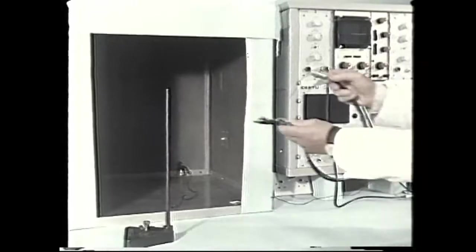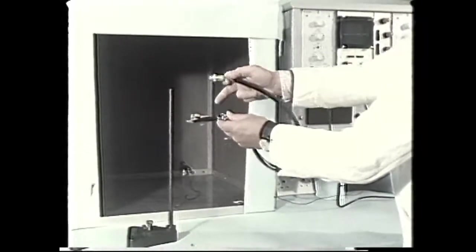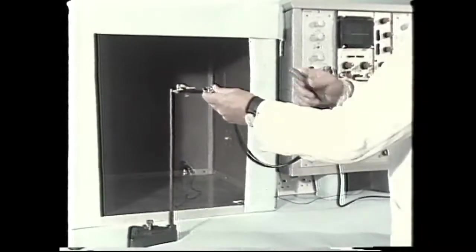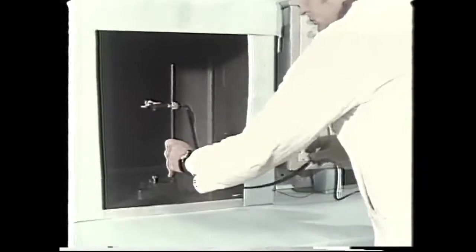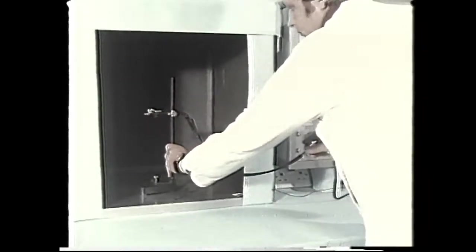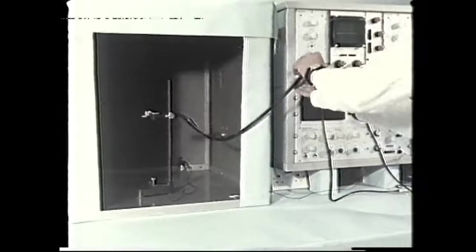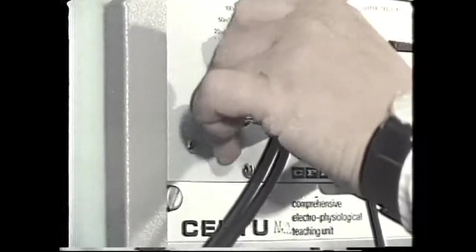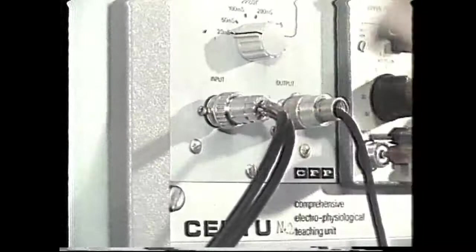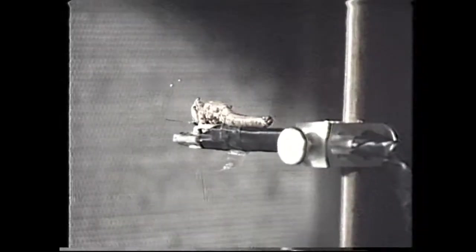Here's the experimental setup. There's the locust. It's placed inside an electrically screened cage and the leads from the two silver wire electrodes in contact with the nerve cord are plugged into the display unit. Now electrical activity in the cord will be picked up by the electronic equipment.